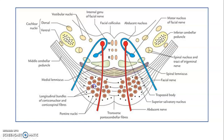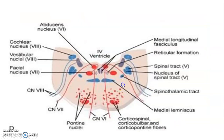The basal pons contains corticospinal, corticobulbar, and corticopontine tracts — you may be asked to list three components of the basal pons. The medial lemniscus carries tracts from fasciculus gracilis and cuneatus, carrying information about proprioception, vibration, and two-point discrimination. This is the middle cerebellar peduncle and the inferior cerebellar peduncle. You can appreciate the vestibular nuclei — dorsal and ventral vestibular nuclei — as well as the cochlear nuclei, and the vestibulocochlear nerve emerging from them.